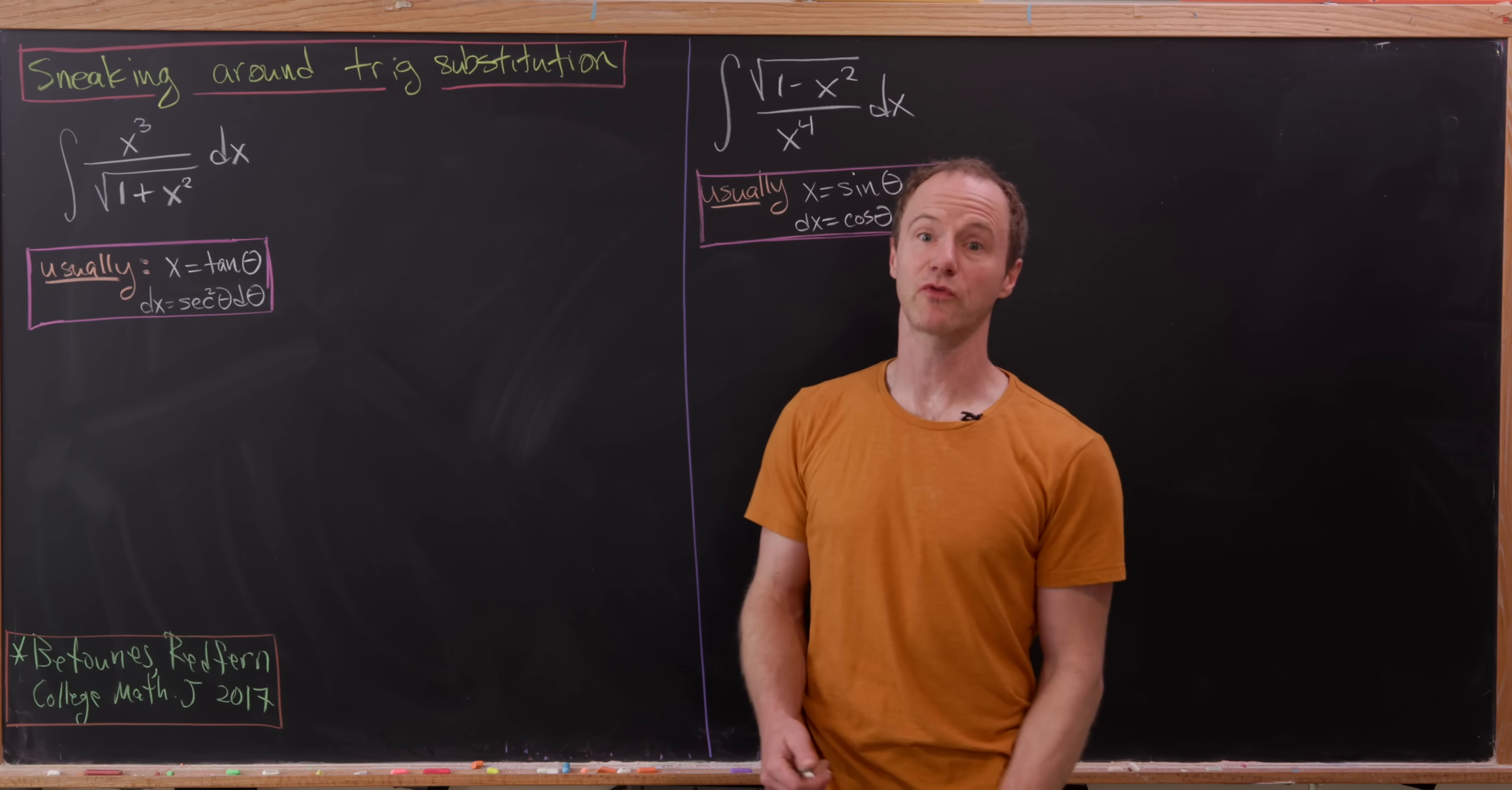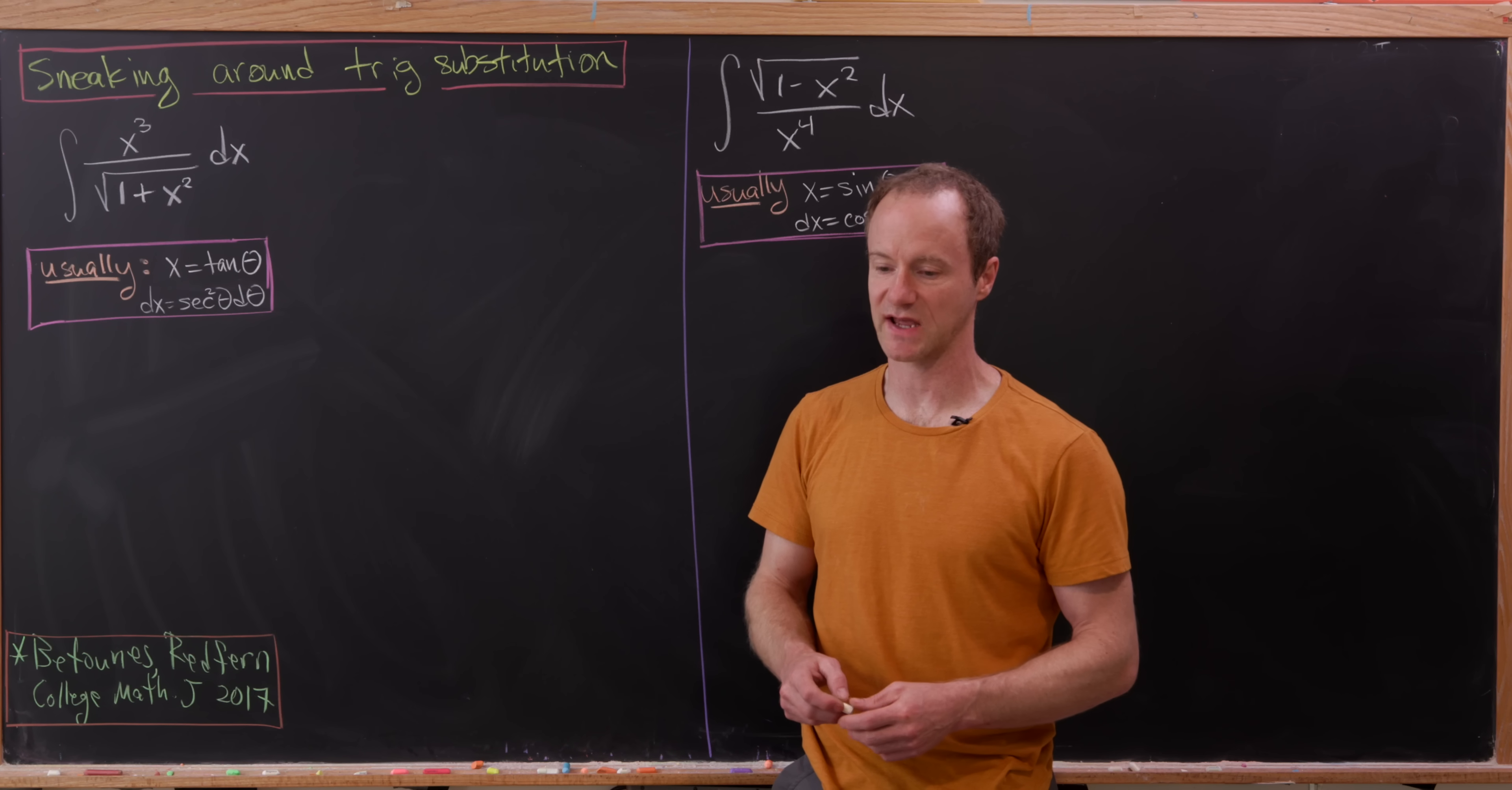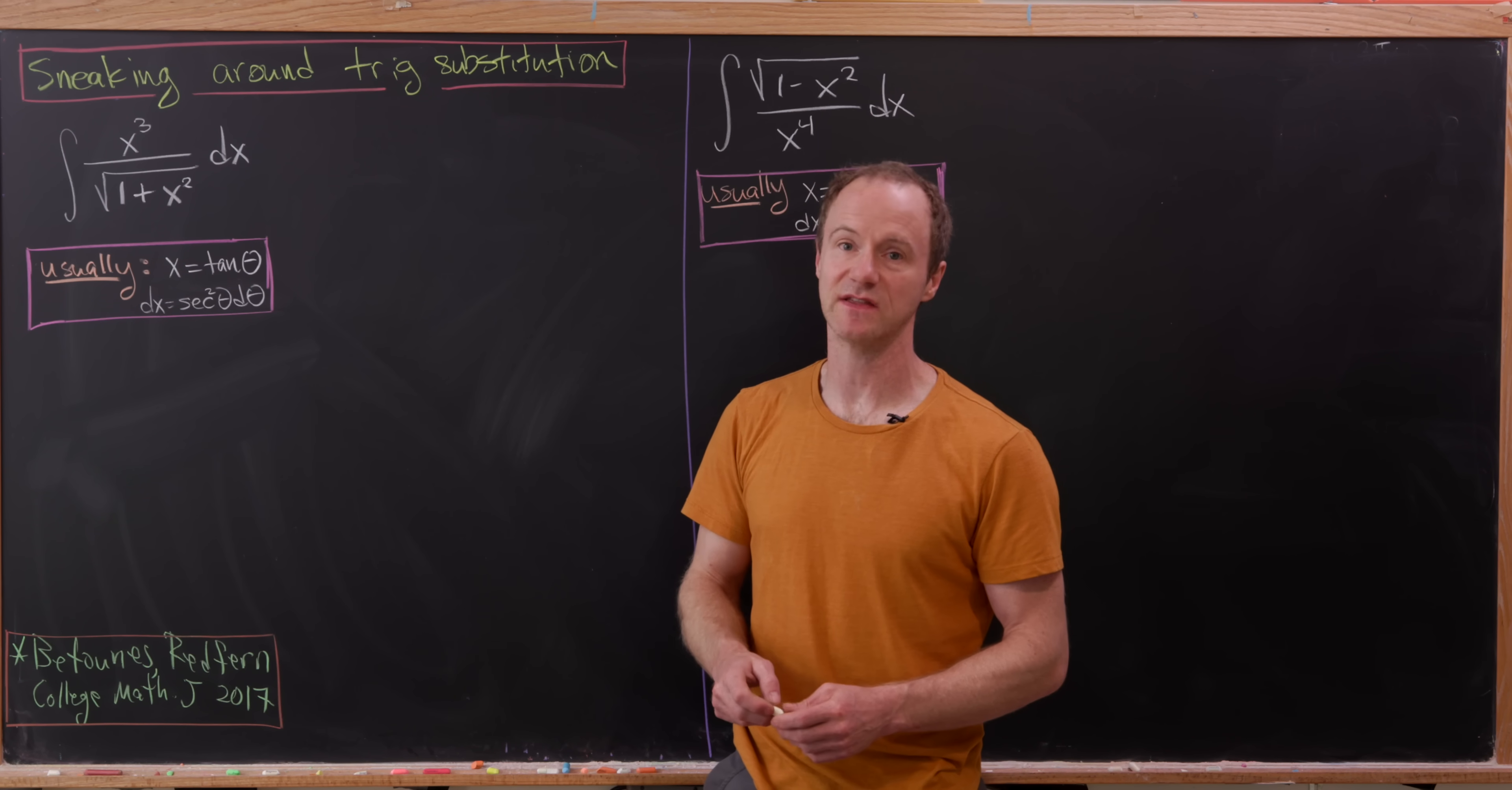So let's just jump right into the first example. Say we want to evaluate the integral of x cubed over the square root of 1 plus x squared. Now, the standard technique here would be to set x equal to tangent theta. That makes dx equal to secant squared d theta.